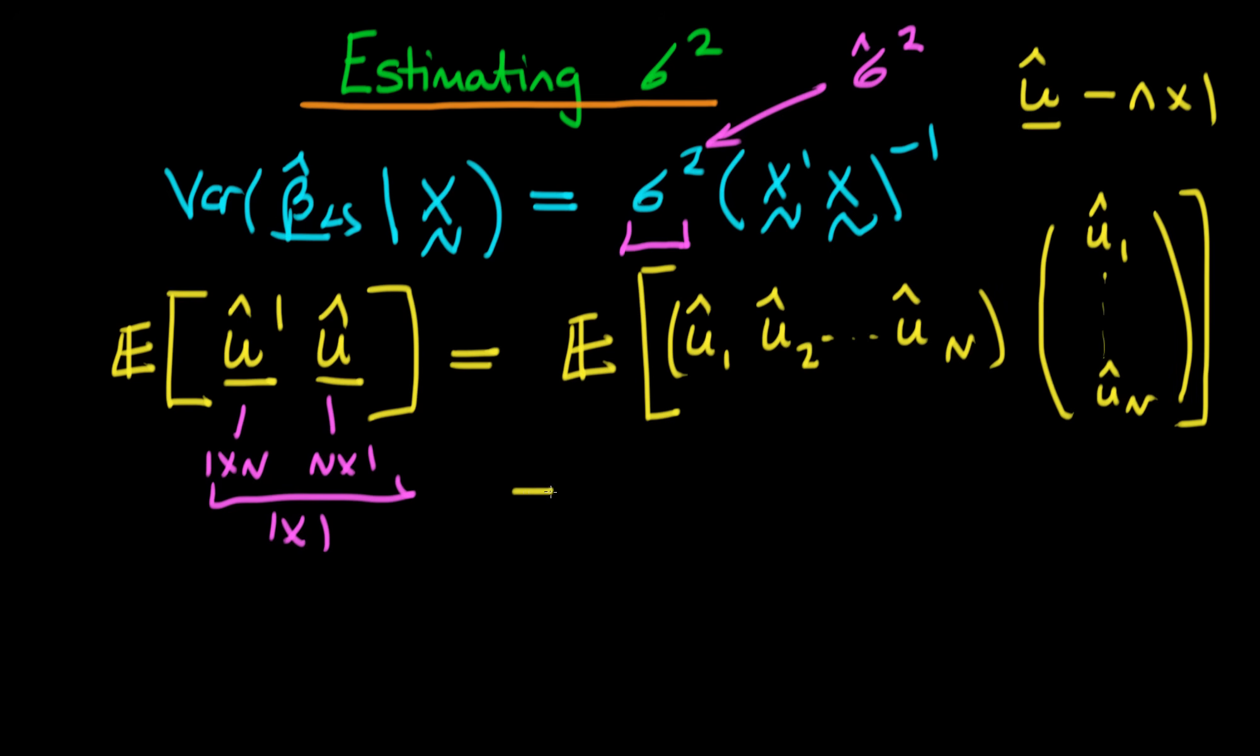So we're taking the expectation of that whole thing, but I hope you can see that essentially what we're going to get here is we're going to get a sum of these square residuals, because the first term is that, the second term is going to be u hat 2 times u hat 2, and then the final term is going to be u hat n times u hat n.